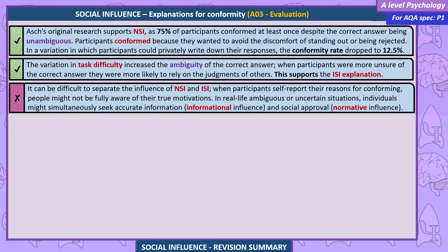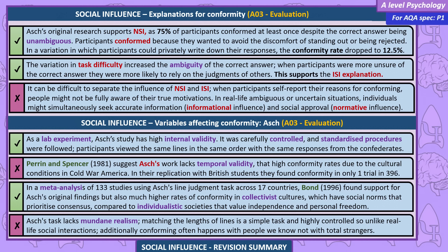In a variation where participants could privately write down their responses, the conformity rate dropped to 12.5%. The variation in task difficulty increased the ambiguity of the correct answer; when participants were more unsure, they were more likely to rely on the judgments of others, supporting the ISI explanation. It can be difficult to separate NSI and ISI — people may not be fully aware of their true motivations. Individuals might simultaneously seek accurate information and social approval. As a lab experiment, Asch's study has high internal validity, with carefully controlled and standardised procedures.